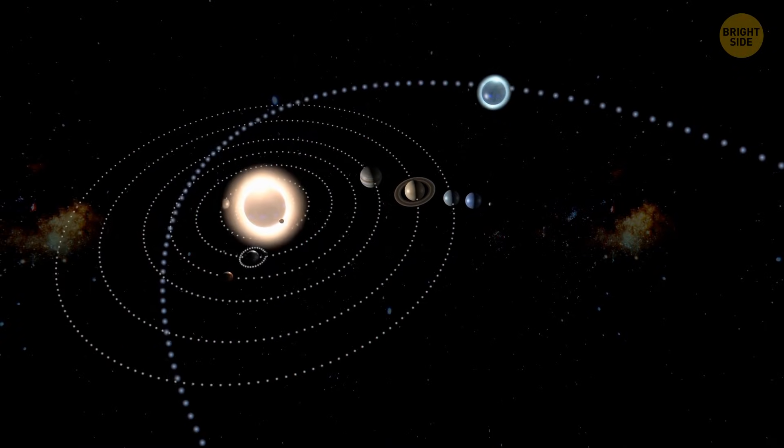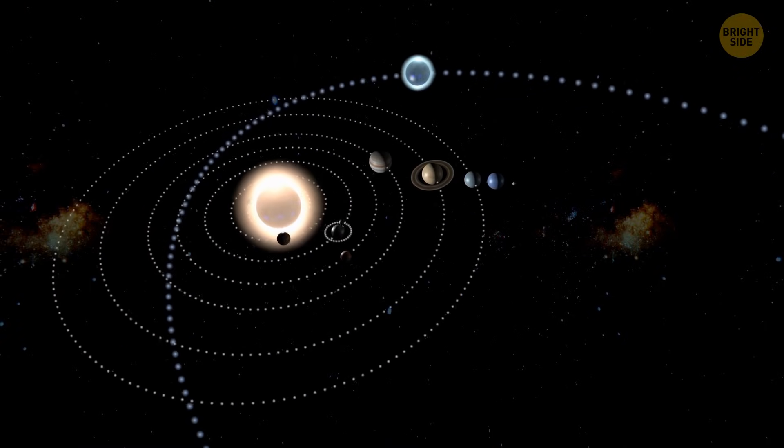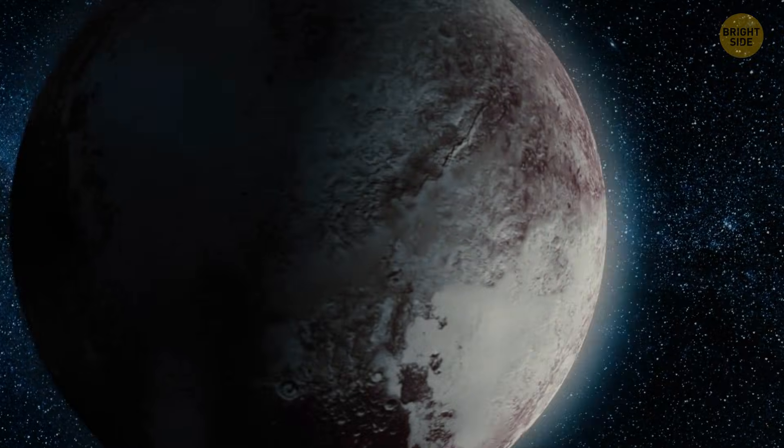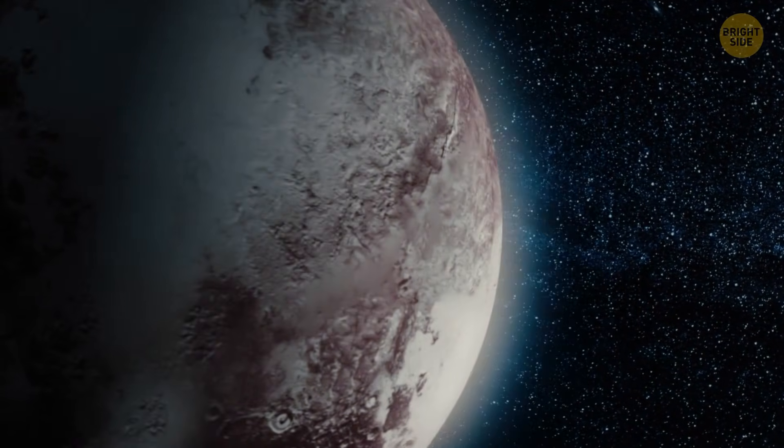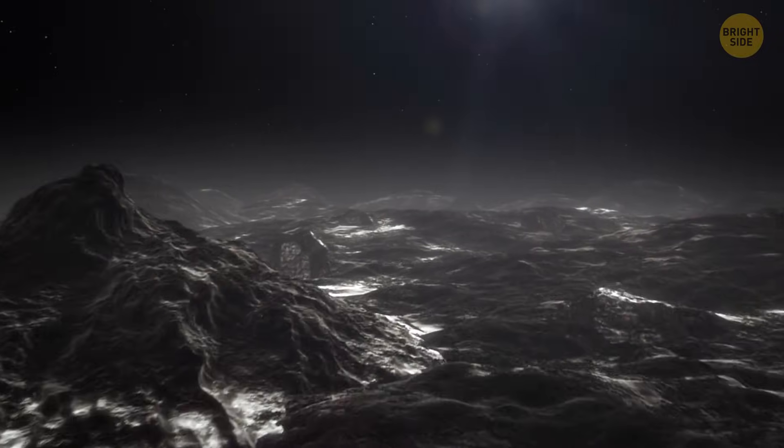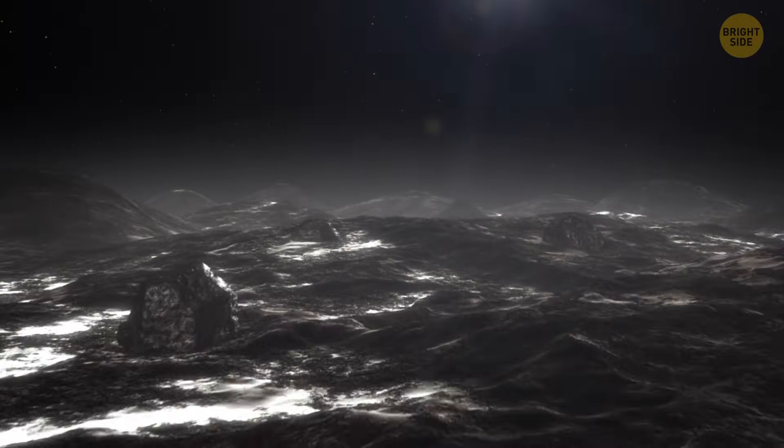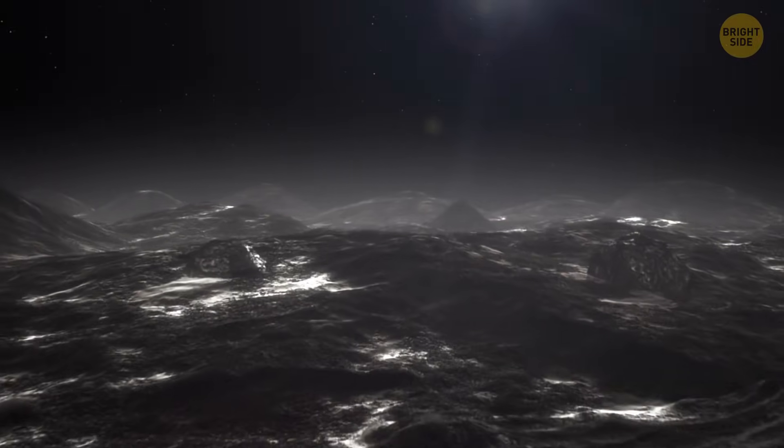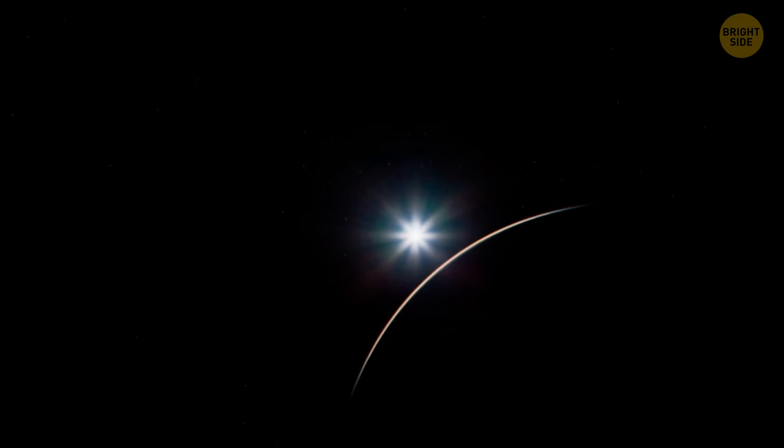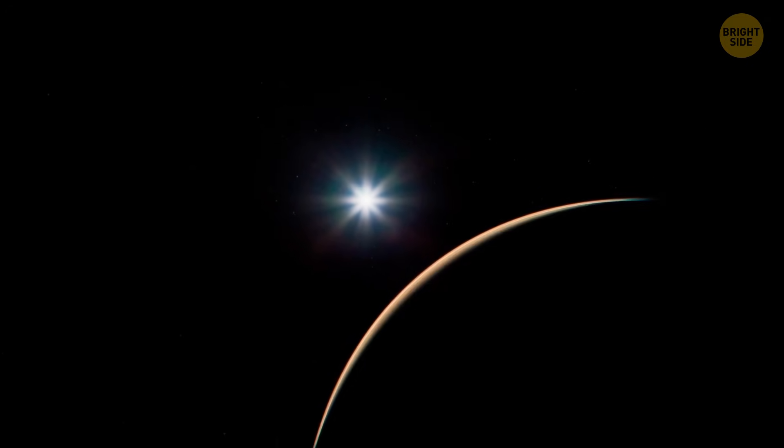Pluto travels a huge distance from the Sun. That, together with an almost non-existent atmosphere, keeps Pluto in a perpetual cold state. Winters there can get a bit more extreme than average. However, the biggest shift someone stranded on Pluto would notice isn't the temperature, but the Sun's brightness. Always thousands of times fainter than our earthly view.